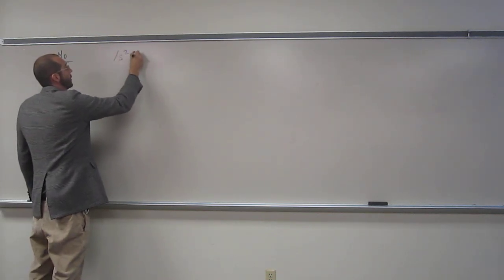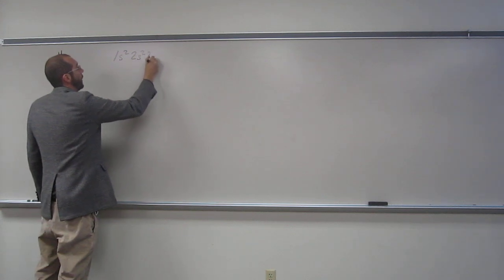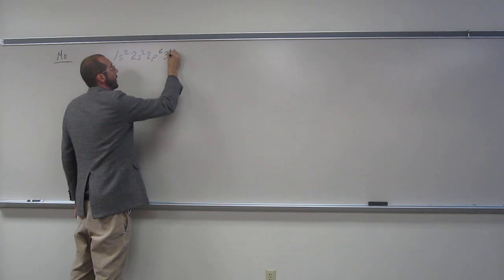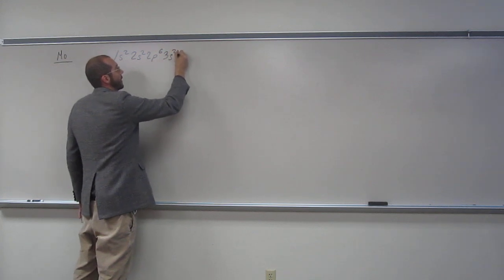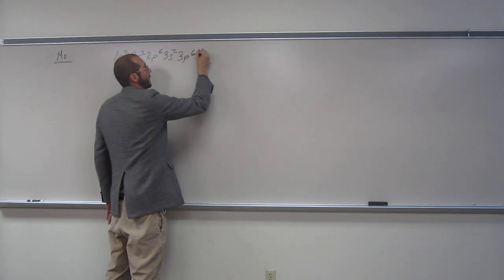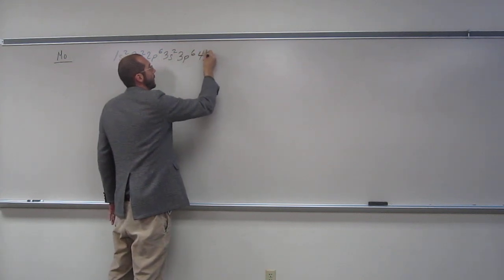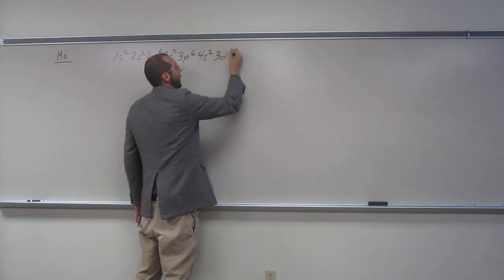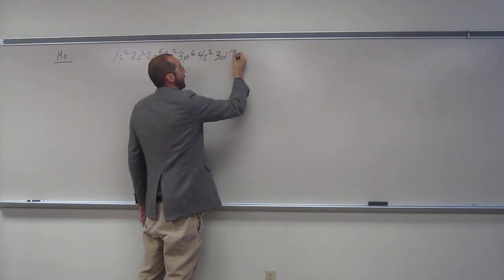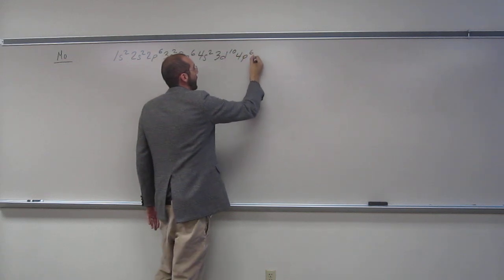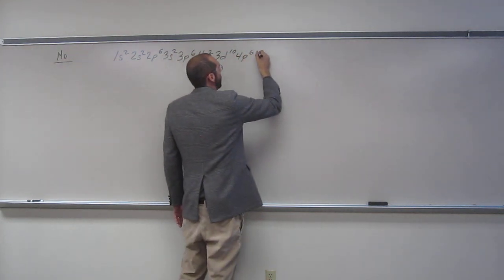Help me write the electron configuration for molybdenum. So, 1s2, 2s2, 2p6, 3s2, what's next, 3p6, what's next, 4s2, 3d, very good, 10, 4p6.